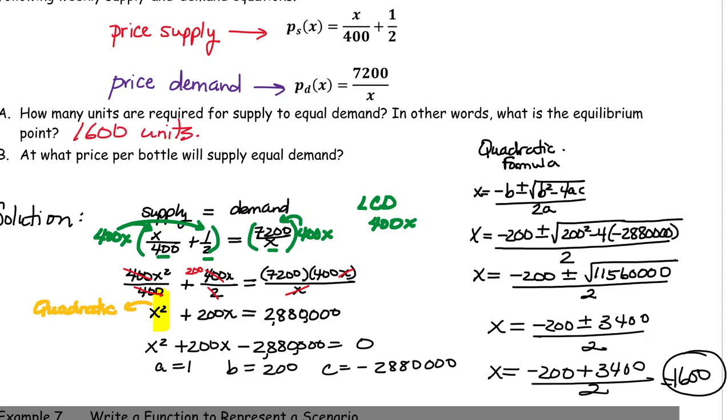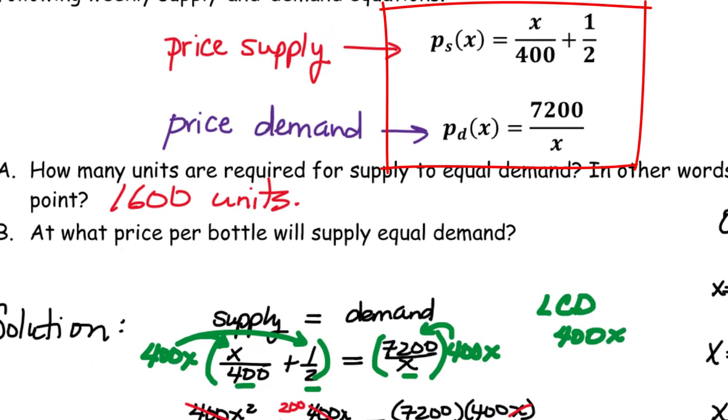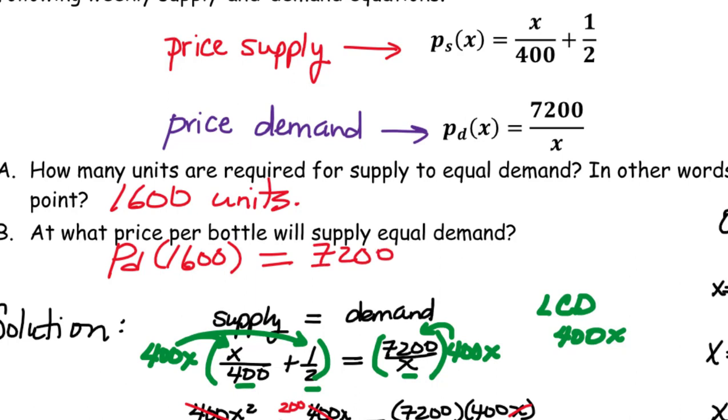And then if we wanted to find part B, the price per bottle, we can just plug 1,600 into either the price supply equation or the price demand equation. It looks like the price demand equation would be easier. It's only one operation. So I'm going to find the price at 1,600 by dividing 7,200 by 1,600, which is going to give us 4.5.